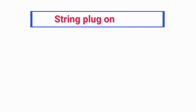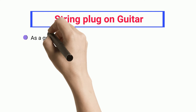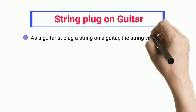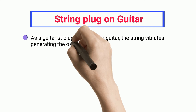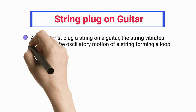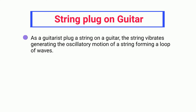String Plucked on Guitar. As a guitarist plucks a string on a guitar, the string vibrates generating the oscillatory motion of the string, forming a loop of waves.